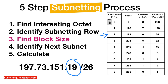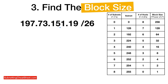Now we need to find the block size. The block size is important because it helps you figure out which subnetting block you're solving for. For this IP address with /26, the block size is 64. Also, this four-column cheat sheet contains all the block sizes for CIDRs /8 through /32, so you'll only need this one cheat sheet to find block sizes for all CIDRs.